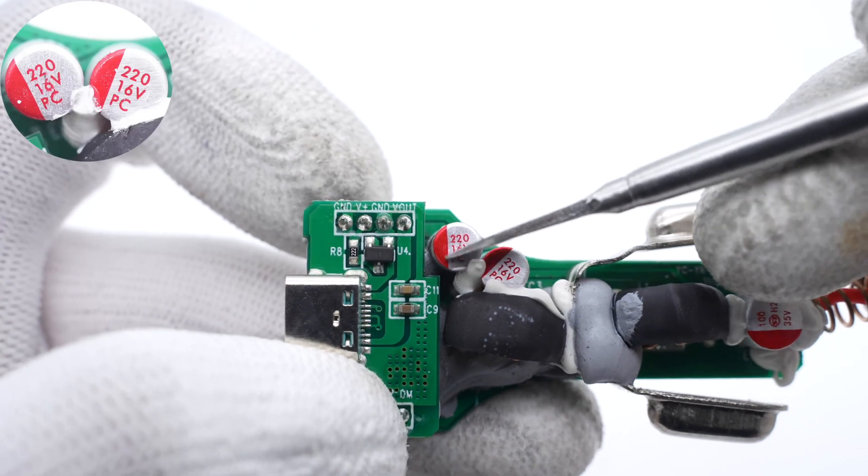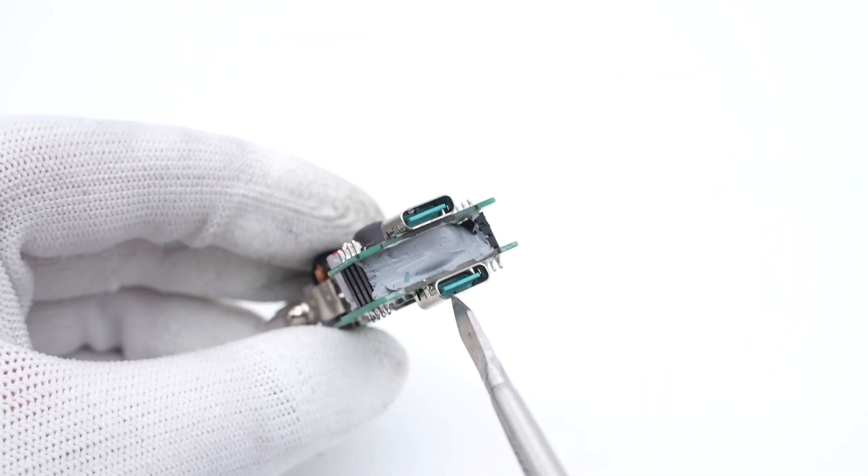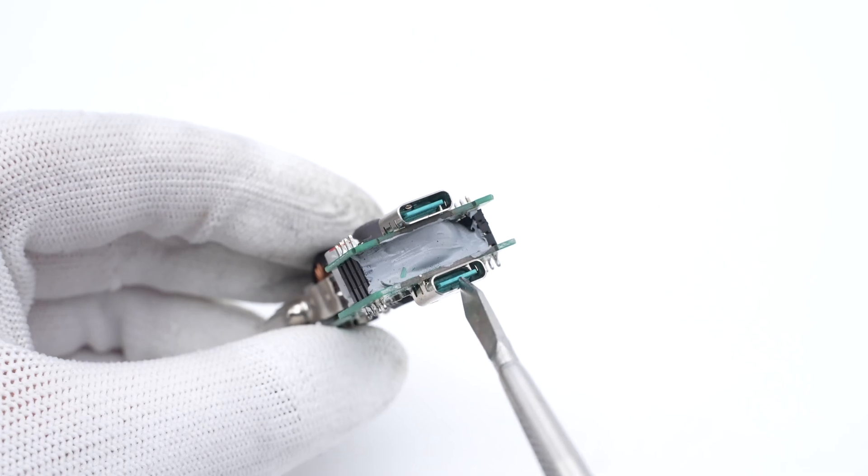Those two solid capacitors for output filtering are 220μF, 16V. And two USB-C connectors are controlled by two independent buck circuits.